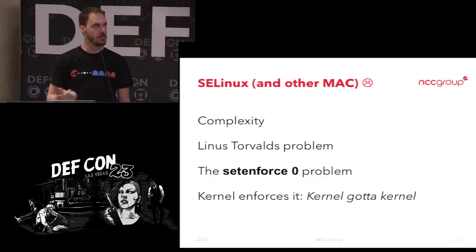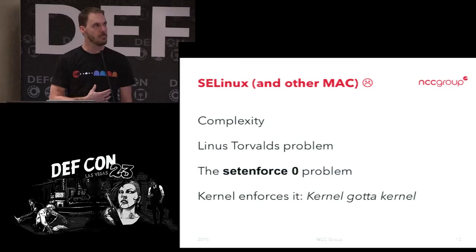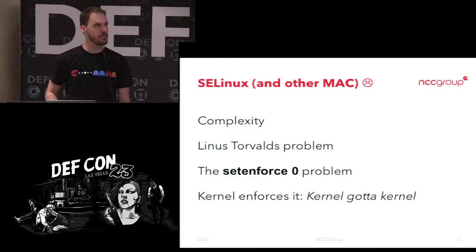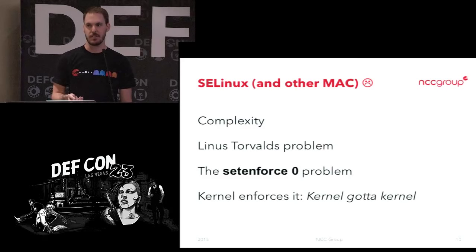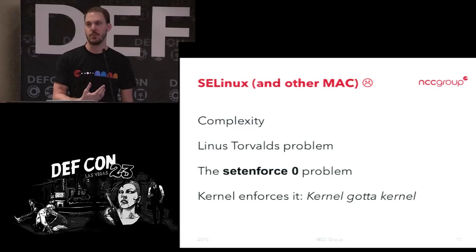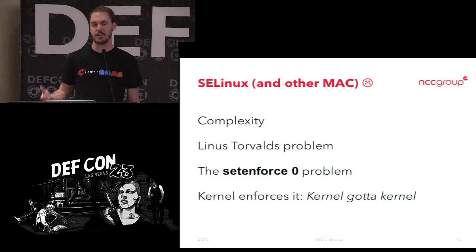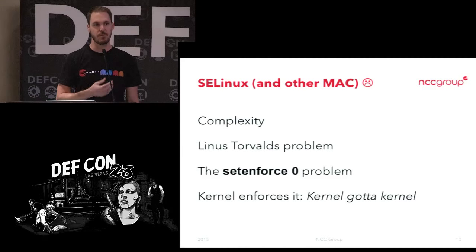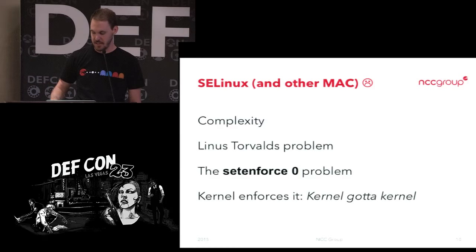Some of the reasons: complexity — it's really complicated to actually create. It has the Linux problem where most other Linux security modules have the setenforce-zero problem, where if you log into a box that has SELinux, the odds of it being disabled are high. And at the end of the day, the kernel is still the kernel. So if there's a kernel vulnerability and SELinux is being enforced by the kernel, it just gets turned off. If you ever look at any of Spender's exploits, he loves to just do that first.